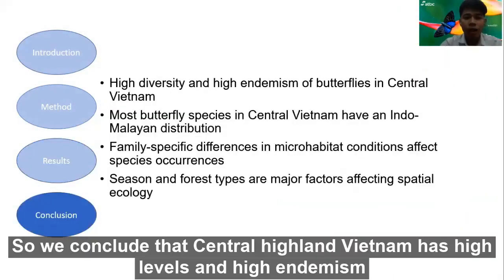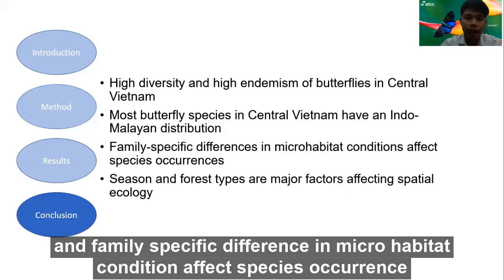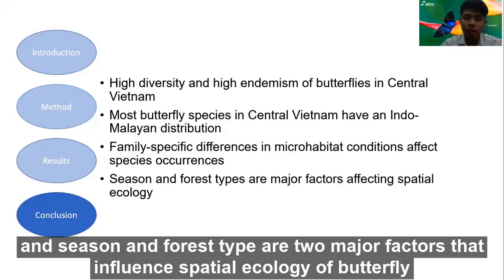We conclude that Central Highland Vietnam has high diversity and high endemism. We found more butterflies in Central Vietnam have an Indomalayan distribution, and family-specific differences in microhabitat conditions affect species occurrence. Season and forest type are the two major factors that influence the spatial ecology of butterflies.